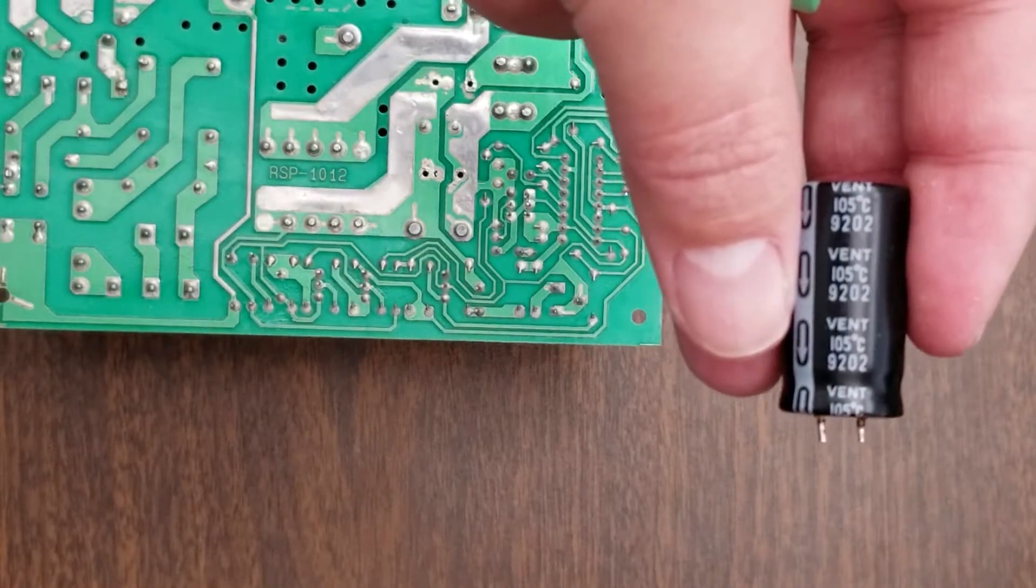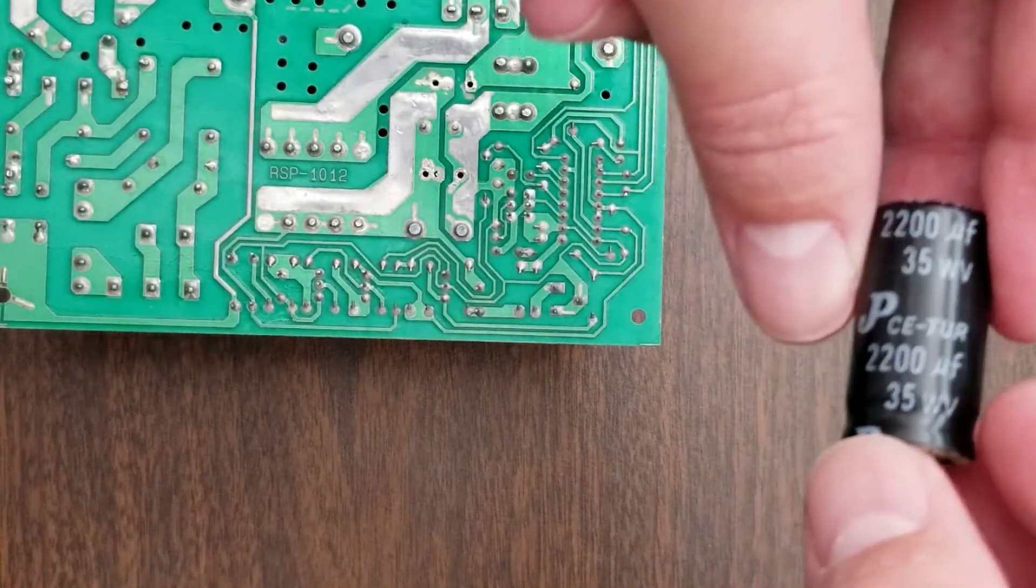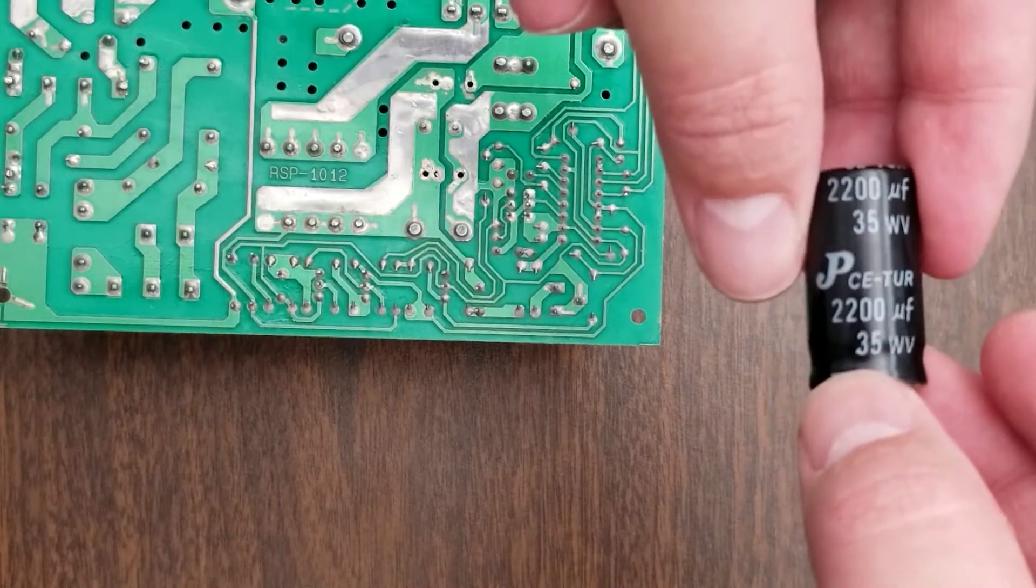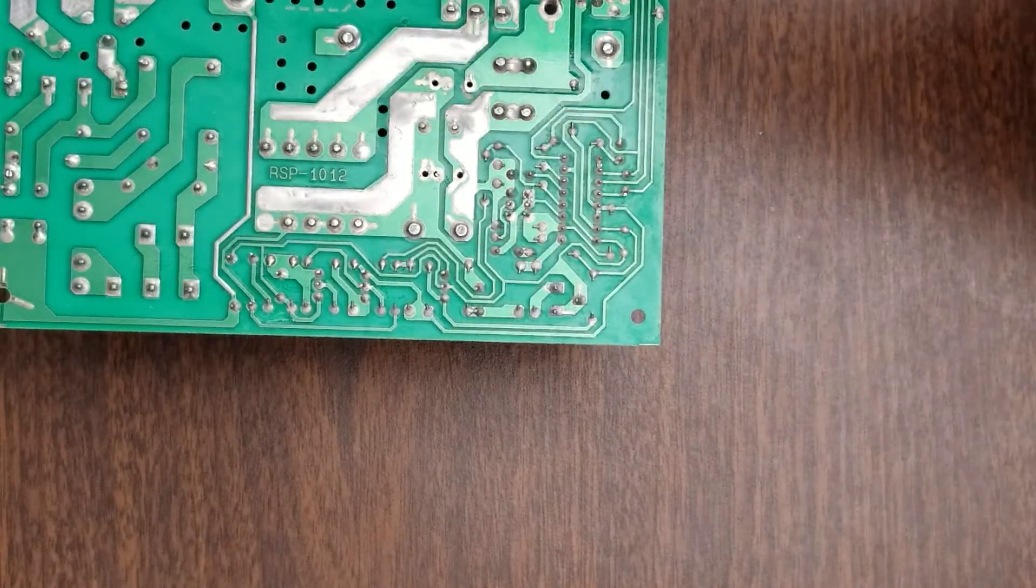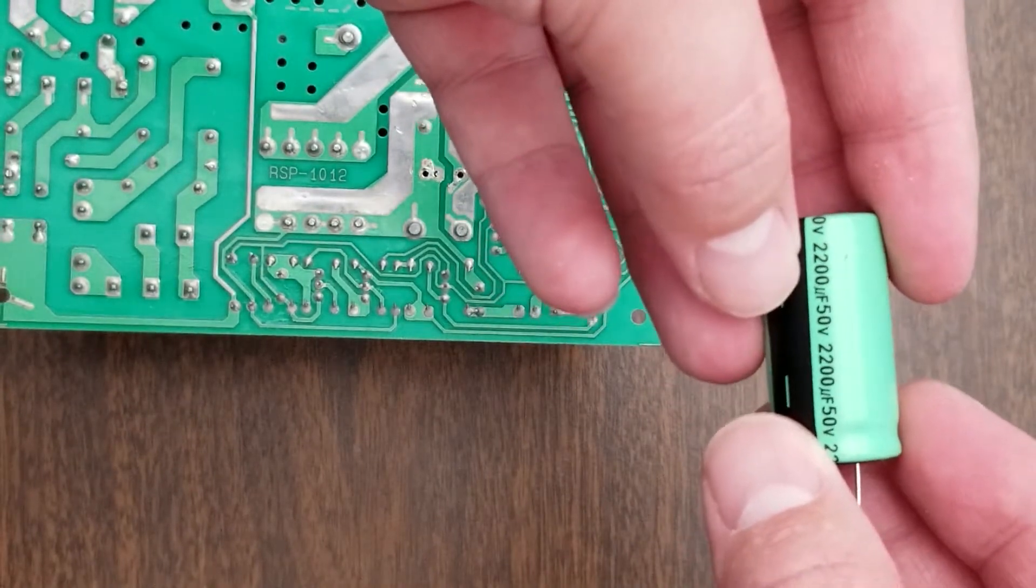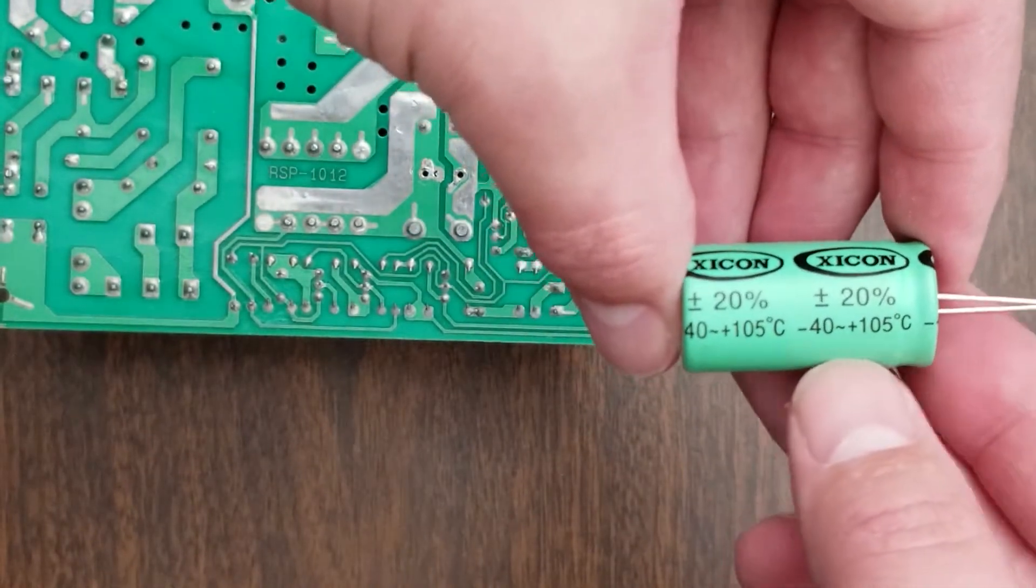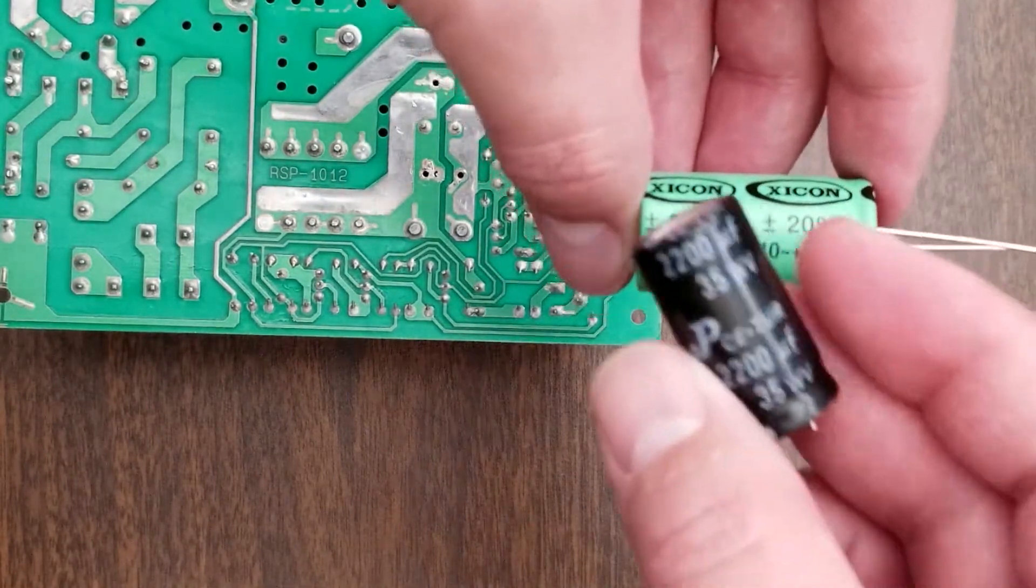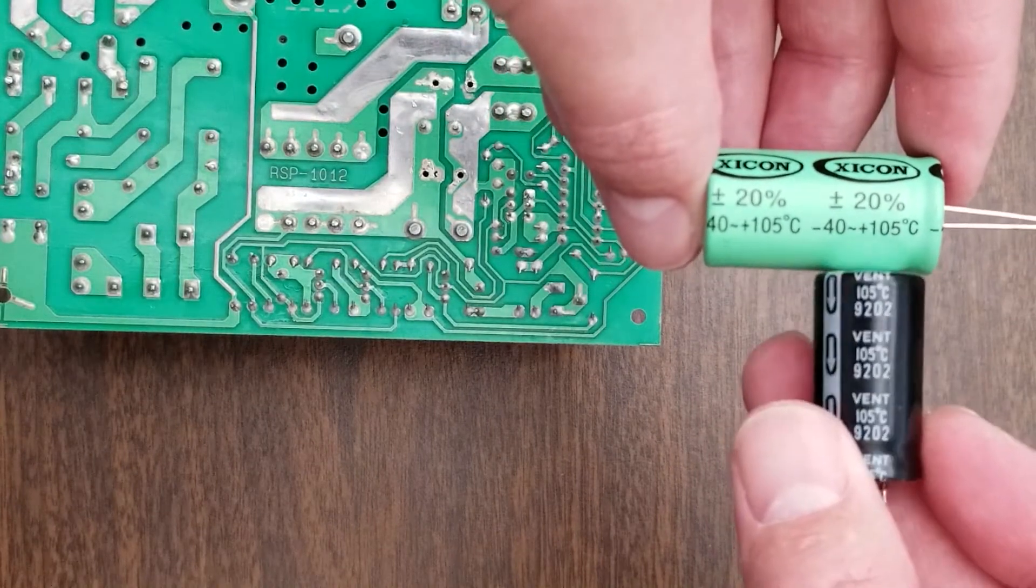Alright, so this is the capacitor that we just took out. Go focus - 2200 microfarad, 35 working volt. What I was able to get at my local supply house is this: 2200 microfarads, 50 volts. Similar rating, 105 degrees C. Flip this over to the other side - 105 degrees C.